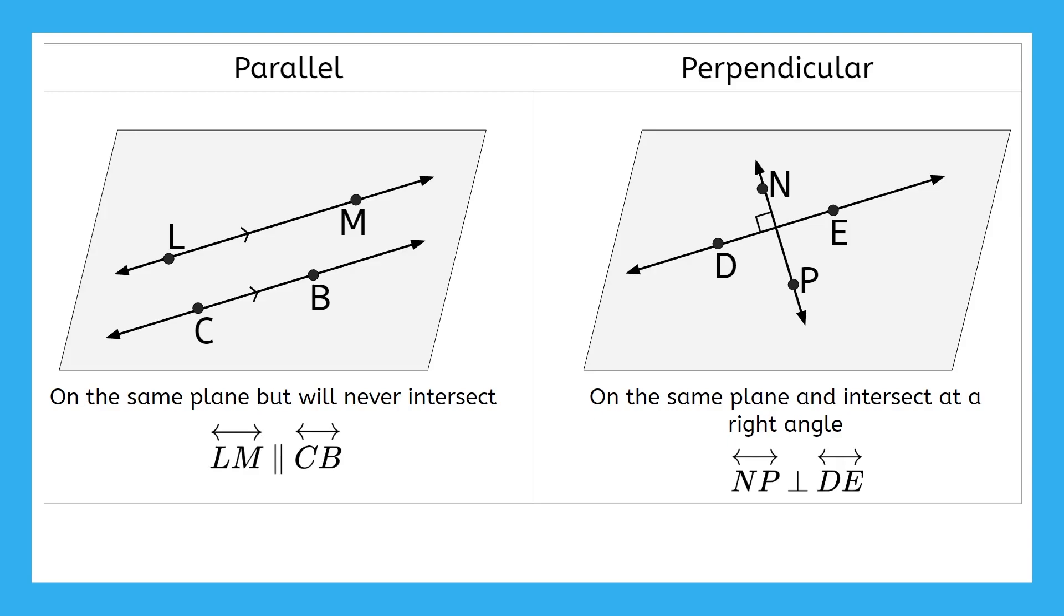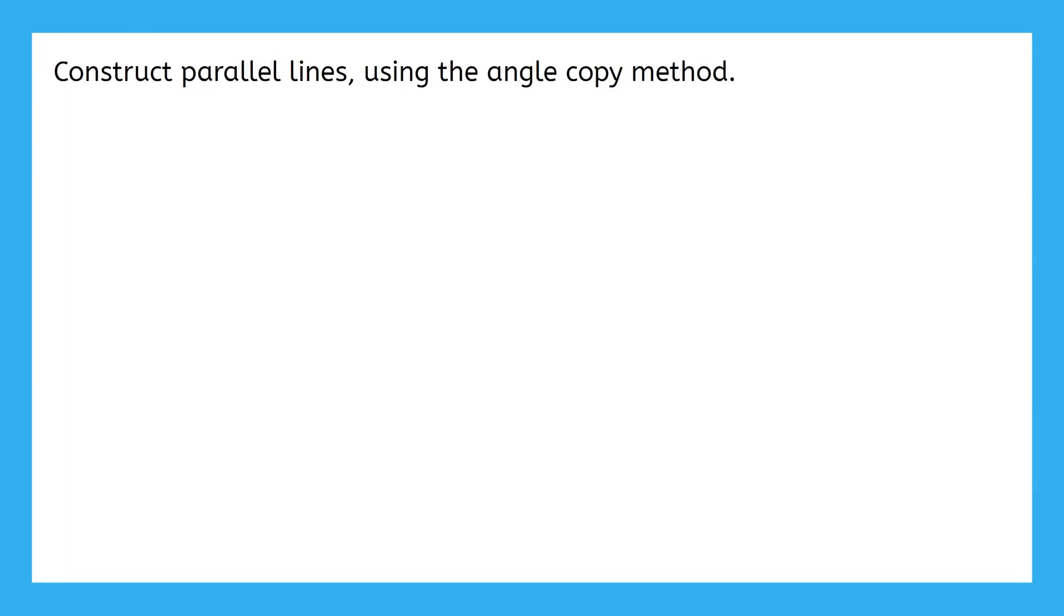Pause the video here if you need more time to write your notes for this. Next up, we're going to start some constructions. We're going to learn one way to construct parallel lines together. And then you'll have an opportunity to explore two more ways in your activity later on. The method we're using is the angle copy method. It'll be best to create this in your notes as we go, so remember to pause the video anytime you need to catch up or rewatch something.